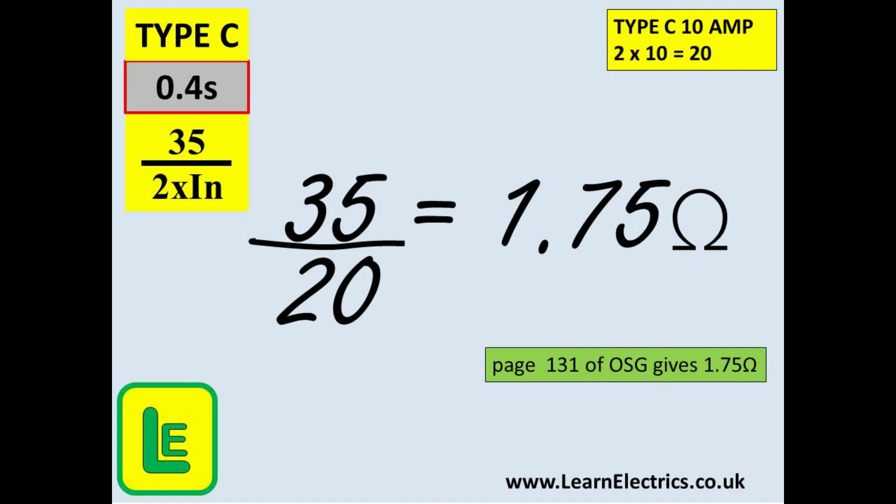We will stay with the 10 amp breaker which is now a type C. For the formula we will double the 10 amp rating and this will give us 20. Our formula then is 35 divided by 20. Pop this into a calculator and we have 1.75 ohms. Table B6 on page 131 of the on-site guide tells us the maximum ZS should not exceed 1.75 ohms. Again it is spot on and as your confidence grows you will trust your calculations when you are on-site without a book.